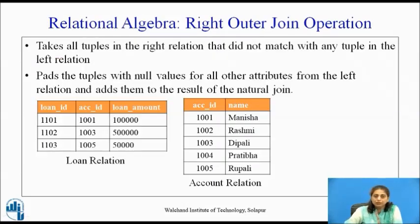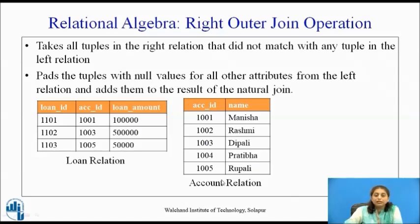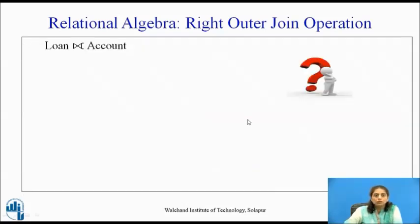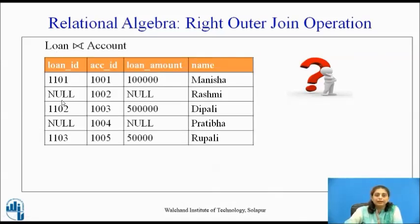Right outer join is the reverse: it takes all tuples of the right relation that did not match any tuple in the left relation, pads them with null for left-relation attributes, and adds them to the natural join. For example, loan right join account: all account records are obtained, and the two accounts without a loan have null values for the loan attributes.